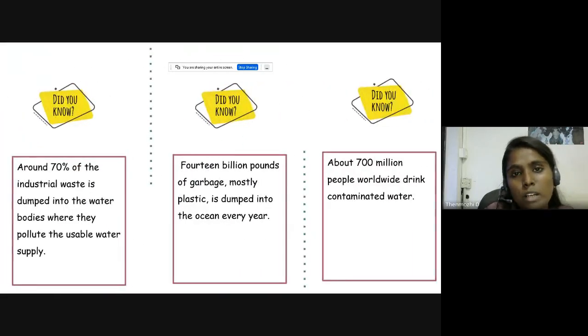I'll read out three important factual informations about water pollution. The first one is around 70% of the industrial waste is dumped into water bodies where they pollute the usable water supply. 14 billion pounds of garbage, mostly plastic, is dumped into the ocean every year.